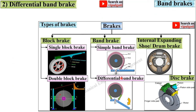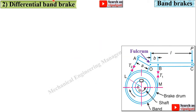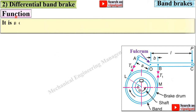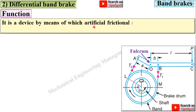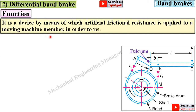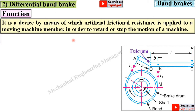Now the second type of band brake: the differential band brake. This figure is of the differential band brake. Its function: it is a device by means of which artificial frictional resistance is applied to a moving machine member in order to retard or stop the motion of a machine.